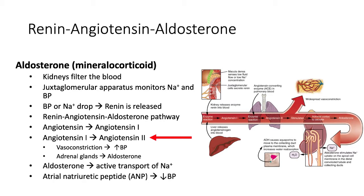A different hormone, atrial natriuretic peptide, or ANP, has the opposite effect of aldosterone. ANP is secreted by the heart in response to stretching of mechanoreceptors in the heart walls when blood volume is too high. ANP inhibits the release of renin and increases sodium excretion. This, in turn, lowers blood volume and therefore blood pressure.